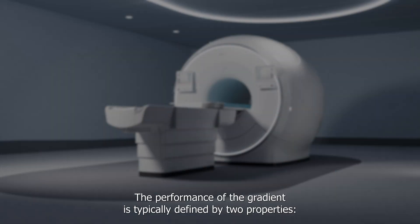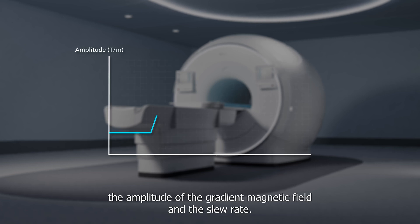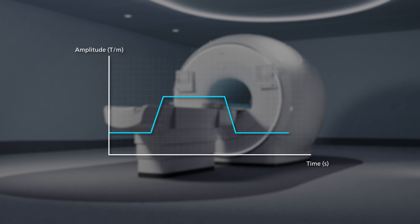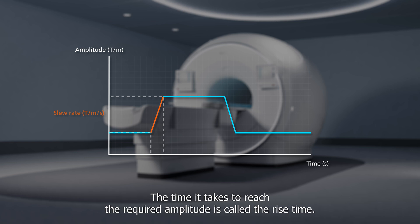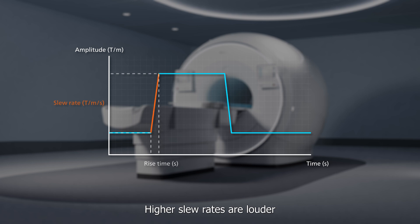The performance of the gradients is typically defined by two properties: the amplitude of the gradient magnetic field and the slew rate. The slew rate is the speed at which the gradients can reach the required amplitude. The time it takes to reach the required amplitude is called the rise time. Higher slew rates are louder.